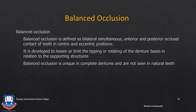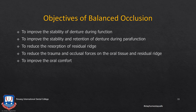Coming to balanced occlusion: by definition it is a bilateral — that is both right and left — simultaneous anterior and posterior contact of the occlusal surfaces of the teeth in centric and eccentric positions. It is developed to lessen or limit the tipping or rotating of the denture bases in relation to the supporting structures. Balanced occlusion is unique to complete dentures and, as mentioned, is not part of the natural dentition.